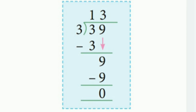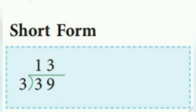Now, how to do it in short form. First, you have to divide the tens and then divide the ones. Here you can see: 3 ones are 3, so at the tens place we write 1. Then 3 threes are 9, so the quotient is 13.